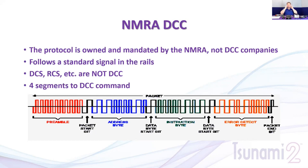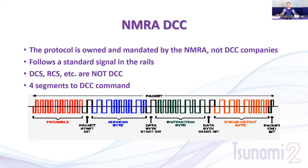The third part is the information — this tells the decoder what to do. For example: 'Locomotive 1000, move forward, speed step 10, turn on F0, turn on F4.' The last part is the error detection, which is basically the end of transmission. Once the decoder receives all four parts, it performs the task, and then the next DCC command begins.